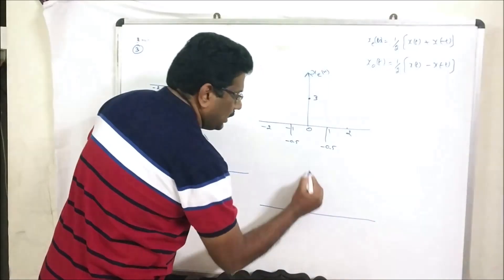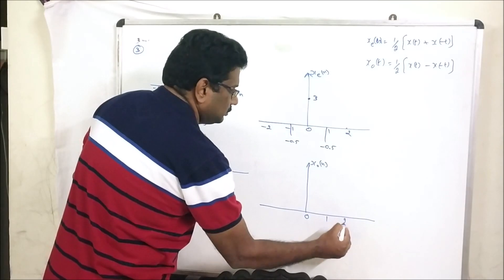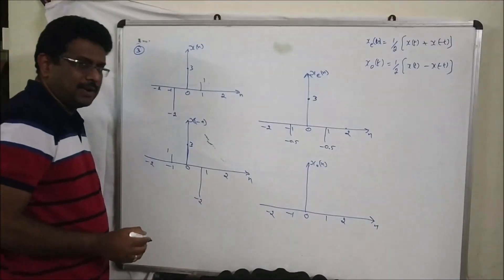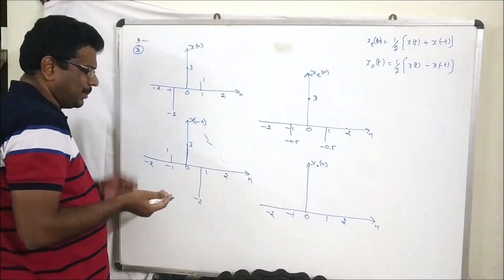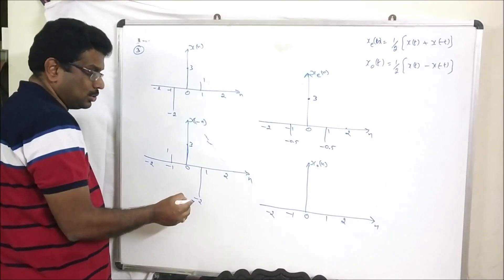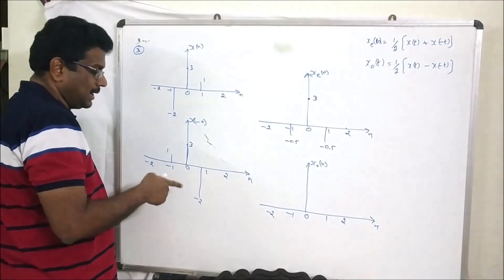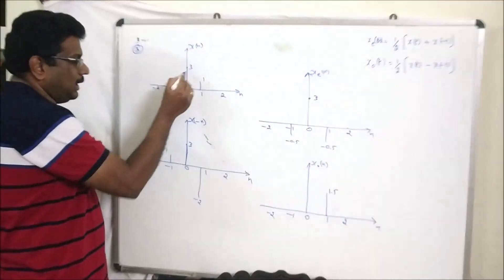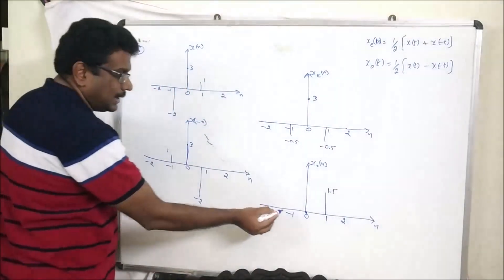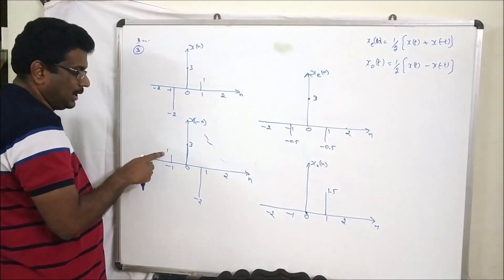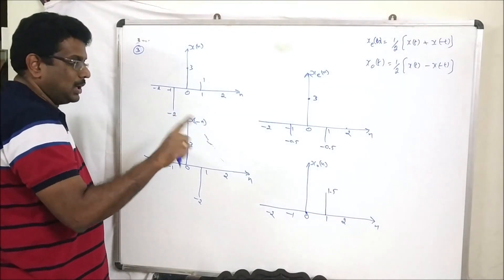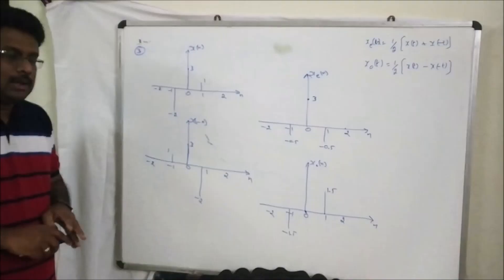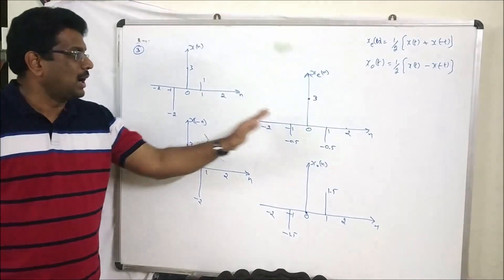Now let us try the odd signal for the same discrete problem. Instead of addition, we do subtraction. At location 2 there is no value. At location 1: value is 1, minus t value is minus 2. 1 minus minus 2 becomes plus 2, so 1 plus 2 equals 3, divided by 2 equals 1.5. At 0: 3 minus 3 equals 0. At minus 1: minus 2 minus 1 equals minus 3, divided by 2 equals minus 1.5. This is the odd component and even component of the given discrete problem.